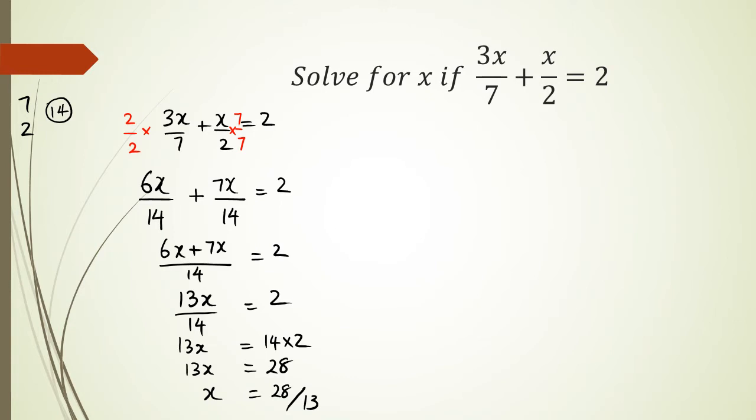Now remember that method that I showed you guys earlier before where we multiplied the number on the denominator with all the terms? Well, in this case, you can do something very similar. So you could actually have 3x over 7 plus x over 2 equals 2.